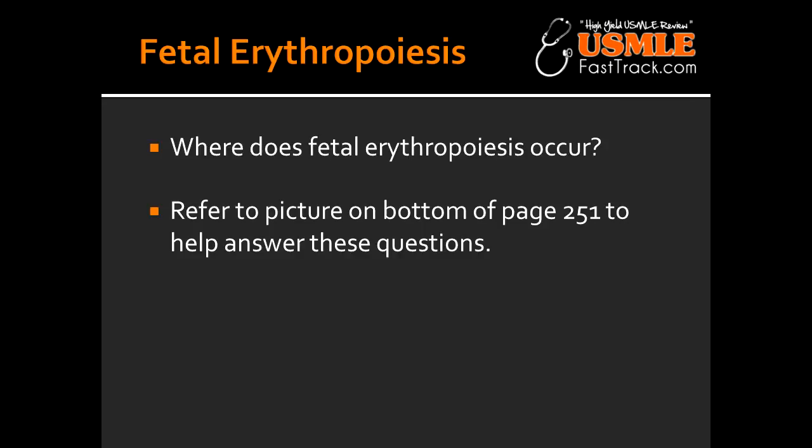Where does erythropoiesis occur in a fetus that's 3 to 10 weeks old? In a fetus that's 3 to 10 weeks old, erythropoiesis occurs at the yolk sac. Where does erythropoiesis occur in a fetus that's 6 weeks old till the time of birth? In a fetus that is 6 weeks old till the time of birth, erythropoiesis occurs in the liver.